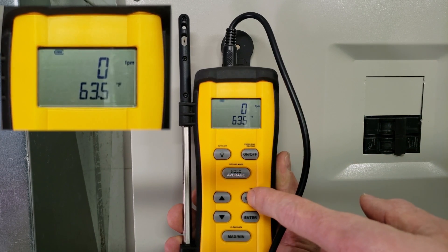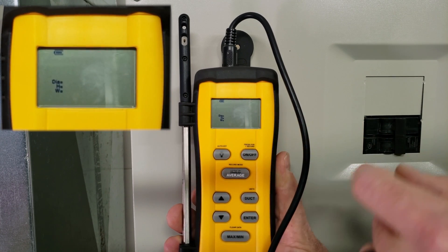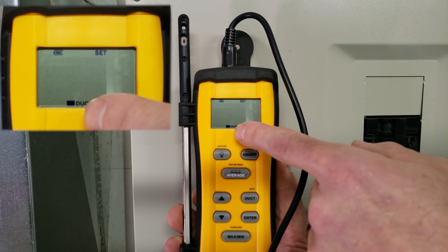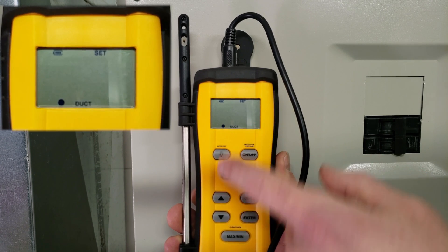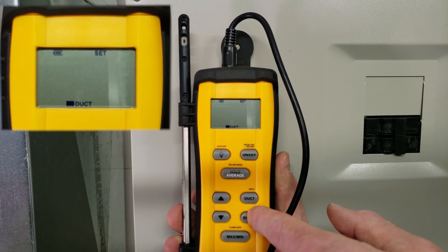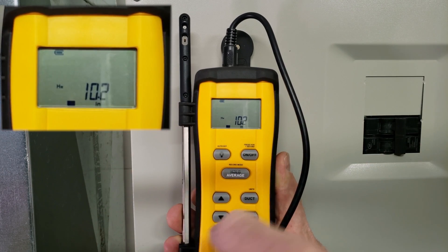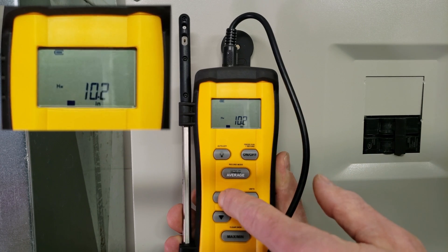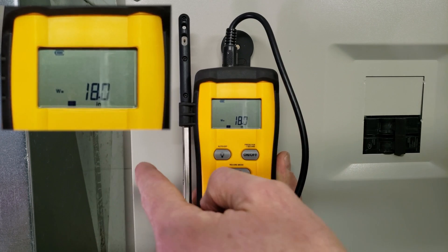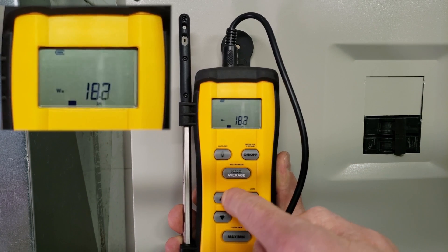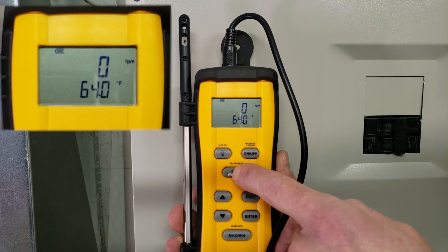We're putting this into a rectangular duct, so we press the duct button. It shows diameter, height, and width. We press enter for rectangular duct. Our duct dimensions are 10 and a quarter inches, so we'll set it to 10.2. The depth is 18 inches, so we press enter. Now we press the average button for a timed average.